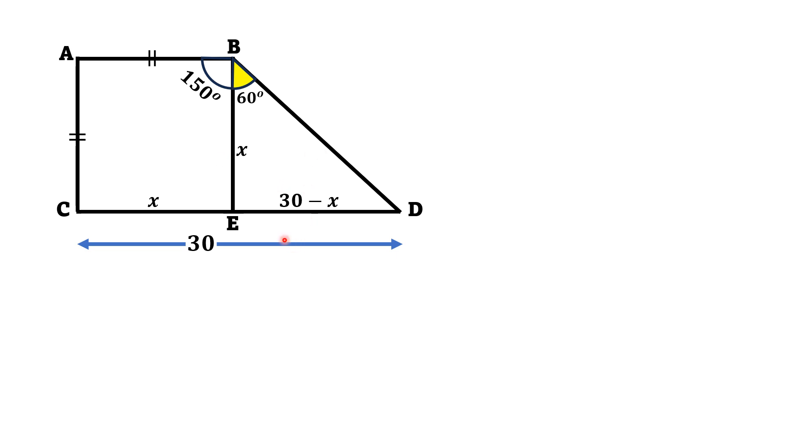For the length ED, since this whole length is 30 units and this length is X, this length must be 30 minus X. Now, we use tangent of 60 degrees in this triangle BED, which is equal to opposite divided by adjacent side.